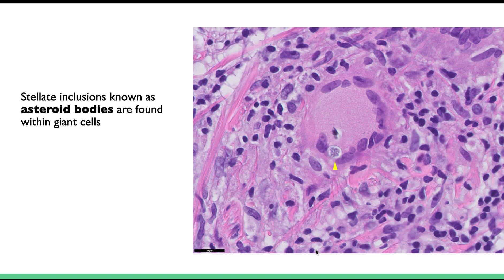Other characteristics seen in the granulomas of sarcoidosis include the asteroid body. The asteroid body is a stellate-shaped body. In the giant cell, there is a star-shaped inclusion known as the asteroid body, and it is characteristic of sarcoidosis.